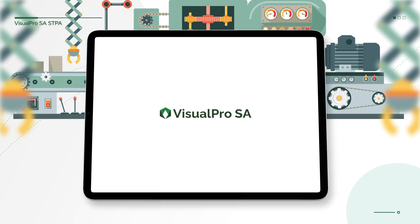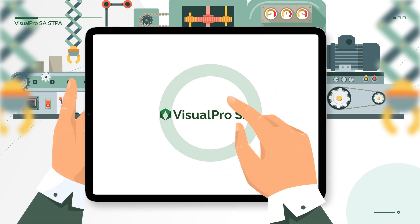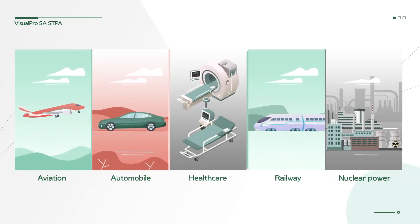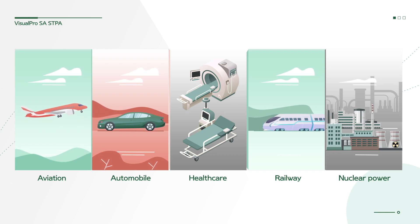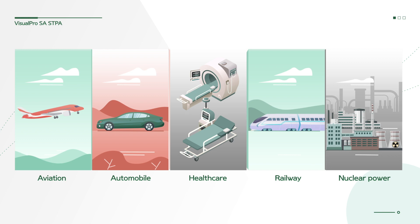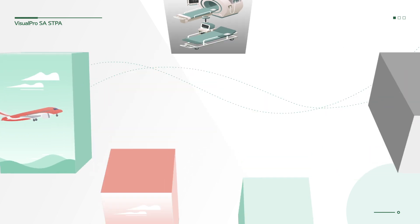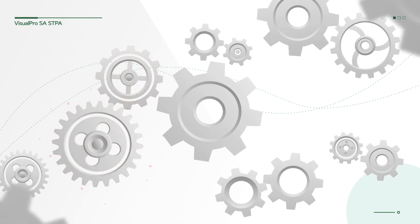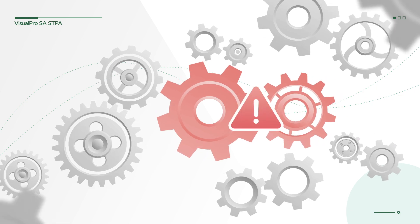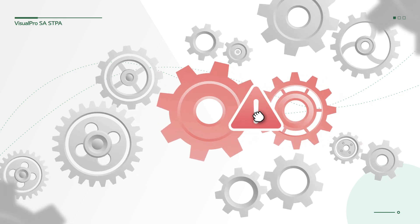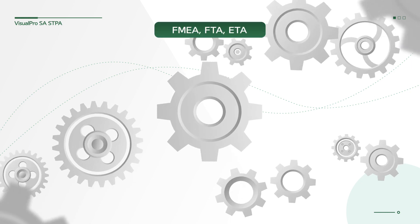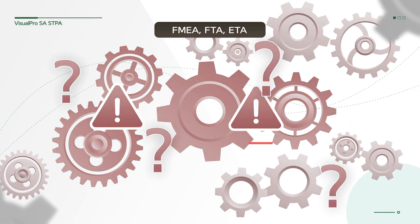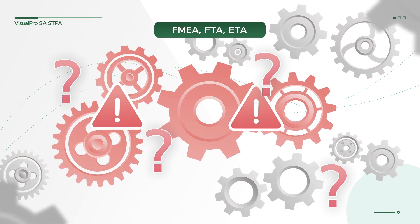In order to prevent such accidents, V-Way has released VisualPro SA. VisualPro SA is based on STPA theory that analyzes hazards of accidents from a new perspective. STPA is being used in a variety of industries to improve safety. STPA can identify not only individual component errors, but also unsafe interactions between the components of a system. Compared to FMEA and FTA, STPA has better performance in detecting and preventing various system interaction problems and ergonomic risks.